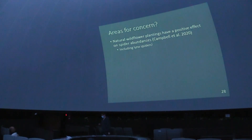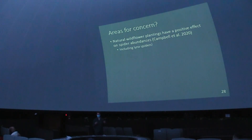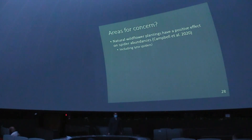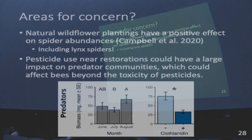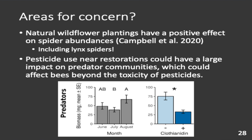Another area of concern: a recent study shows that native plantings in agro-ecosystems are intended to do multiple things — increase pollinators, but also introduce predators to deal with pests like cucumber beetles. However, some of these things might be in conflict: if there are lots more lynx spiders, that might be negative for bees. There may be trade-offs in how we design these plantings, and we might need to introduce something to help limit lynx spider abundances.